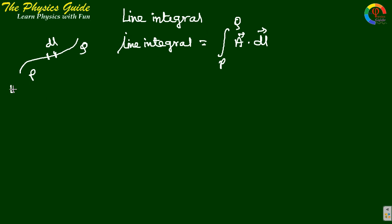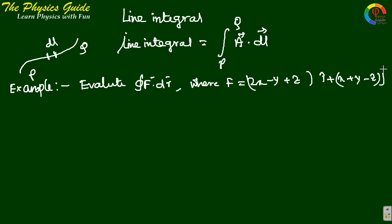Let's try an example. Evaluate ∮F·dr over a closed path, where F = (2x - y + z)î + (x + y - z²)ĵ + (3x - 2y + 4z)k̂.